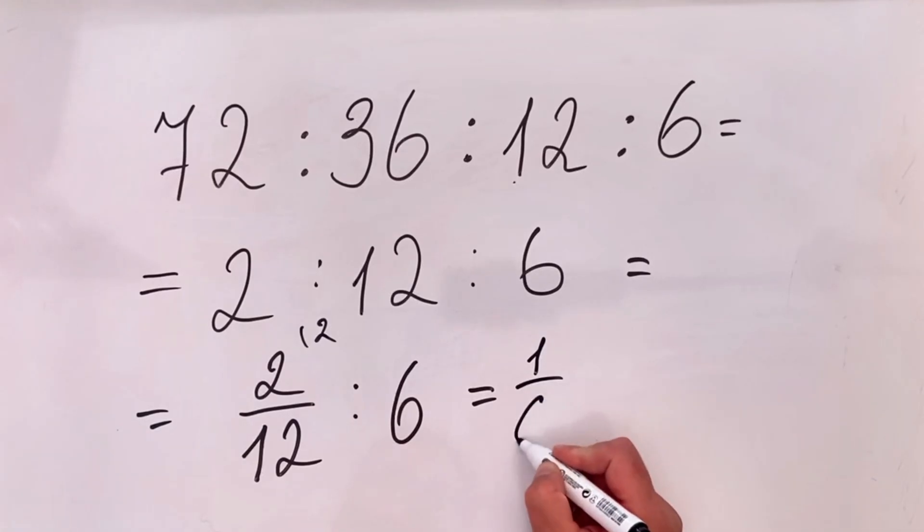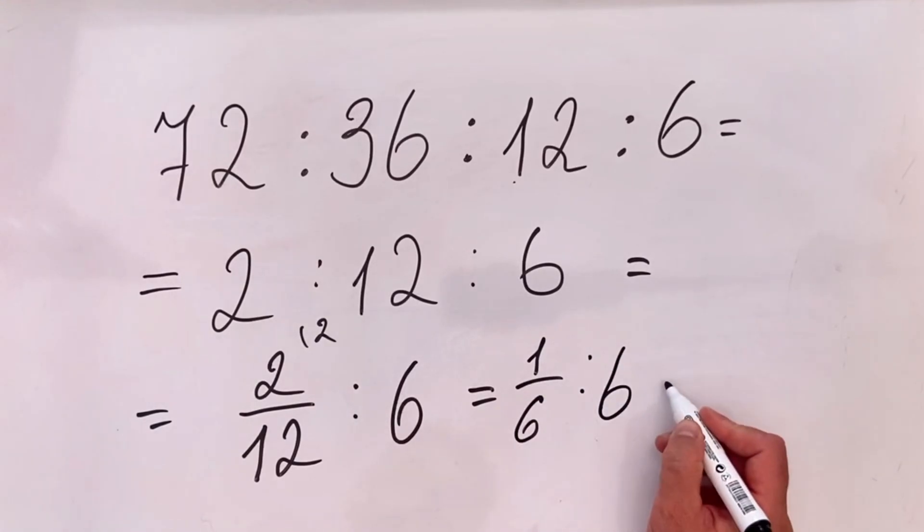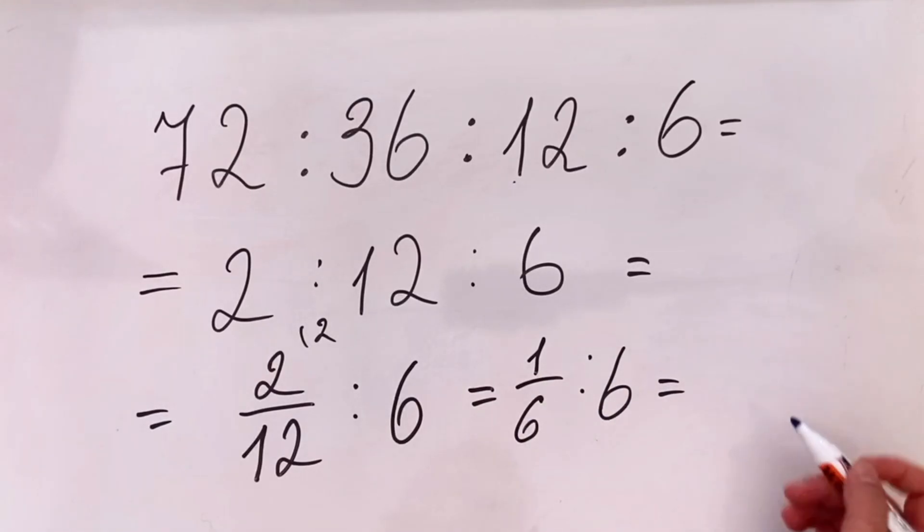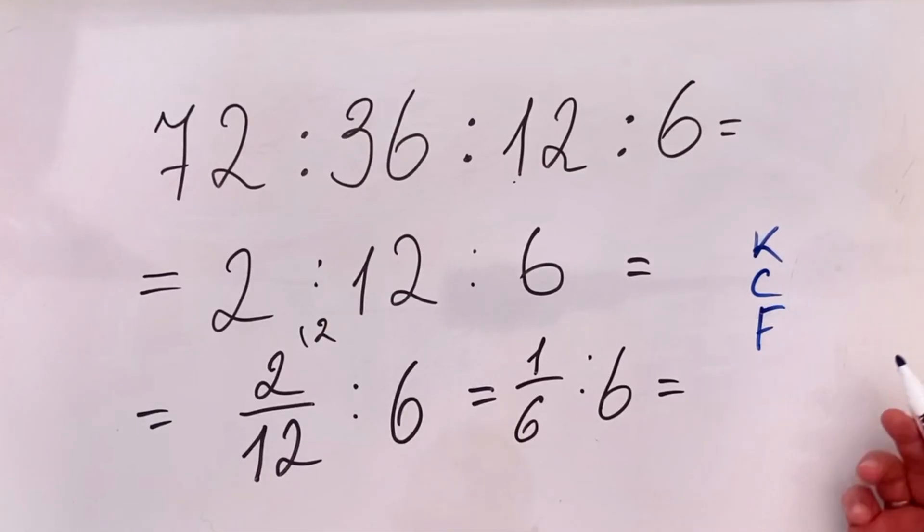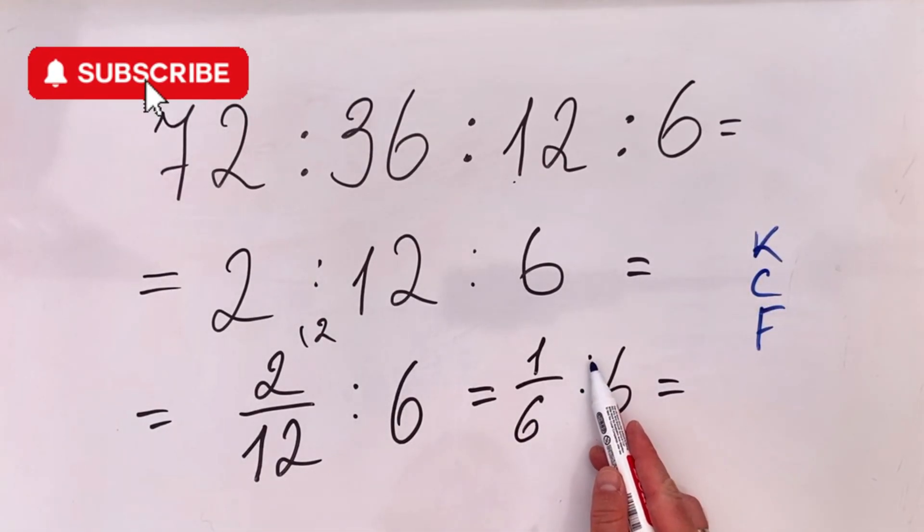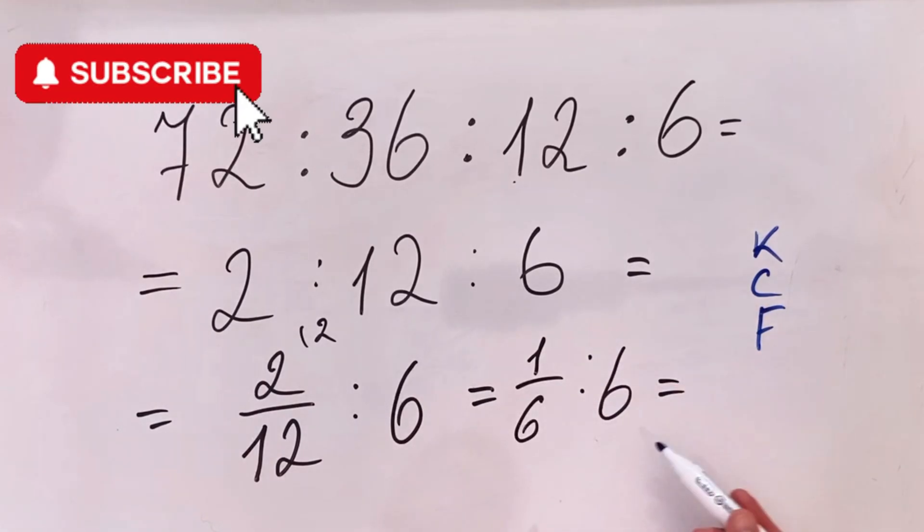And here, because we have a fraction divided by a number, we need to remember the KCF rule: keep the first fraction, change the sign (so division changes to multiplication), and flip the second one.